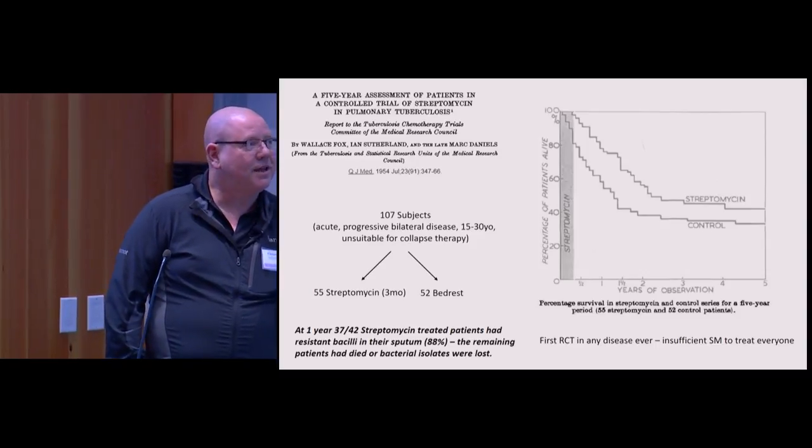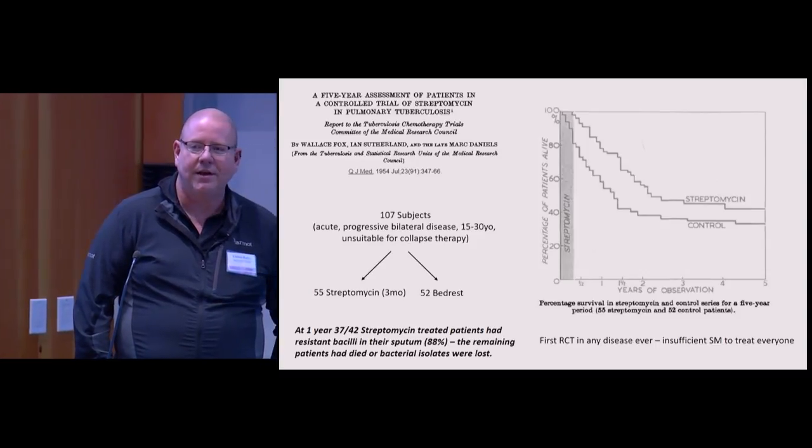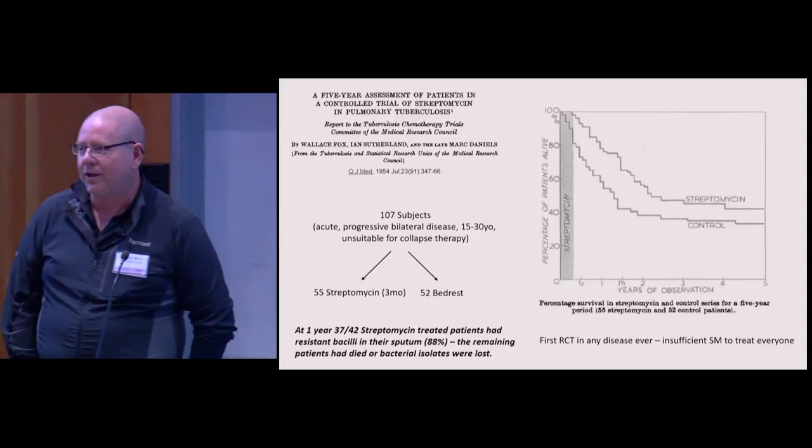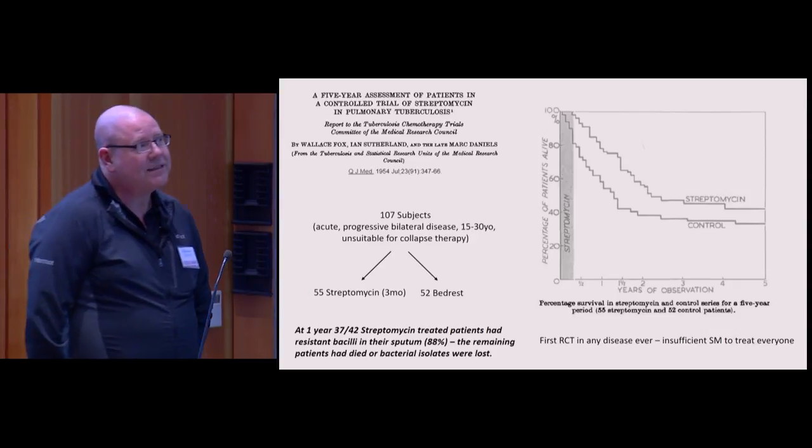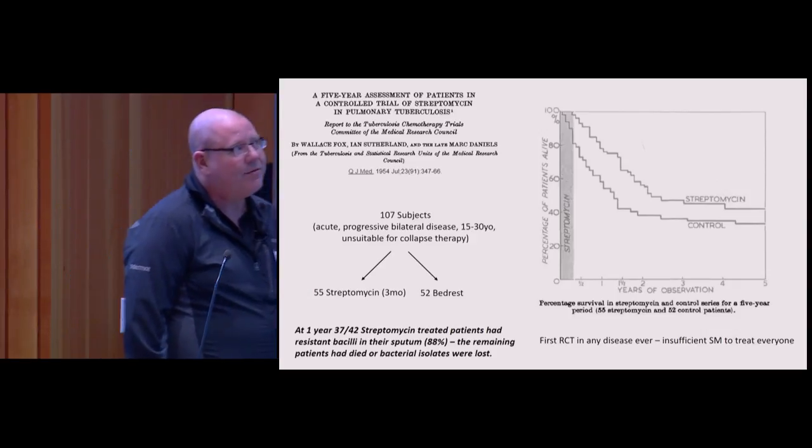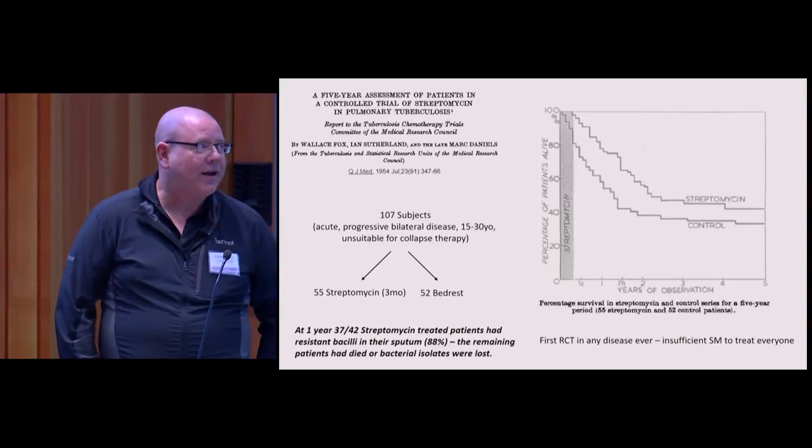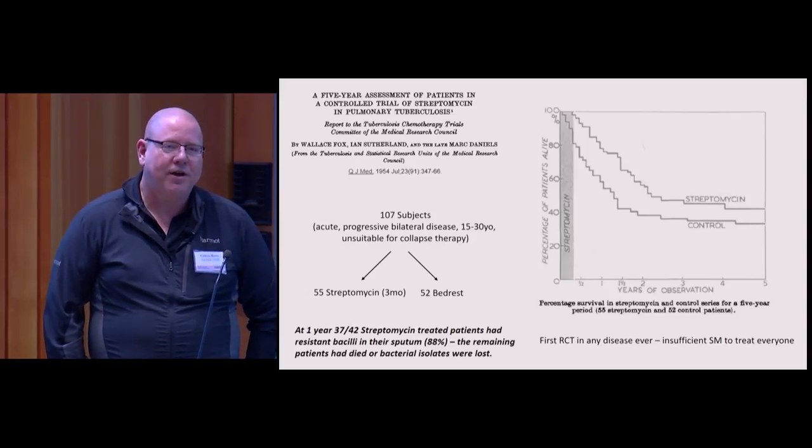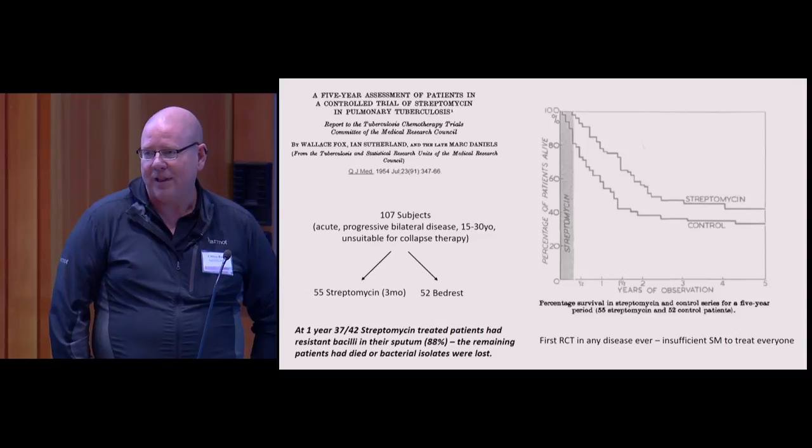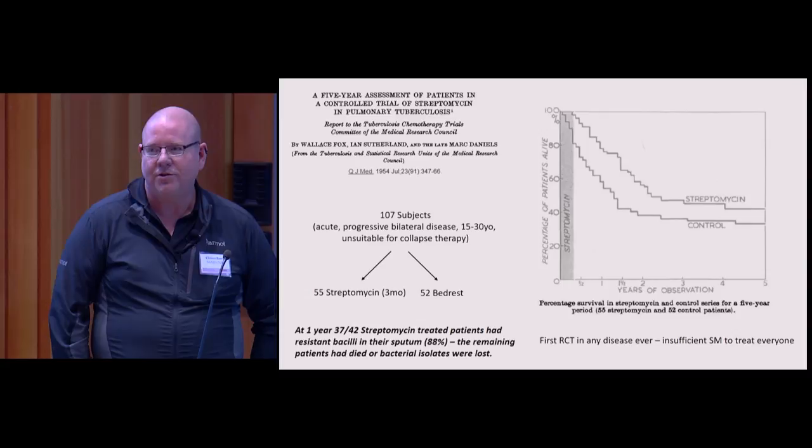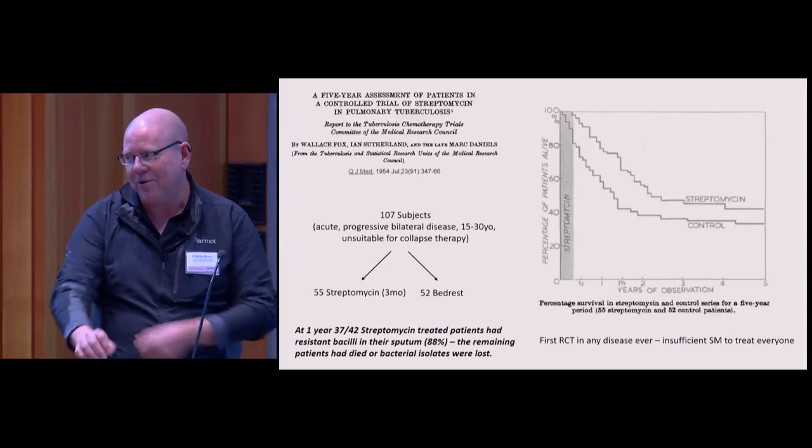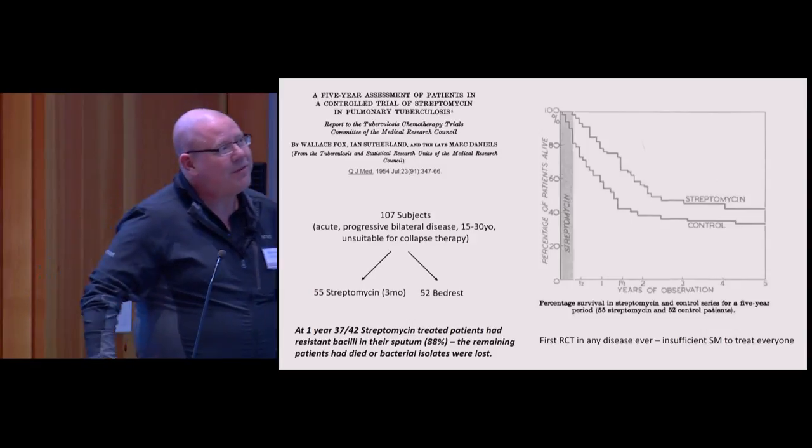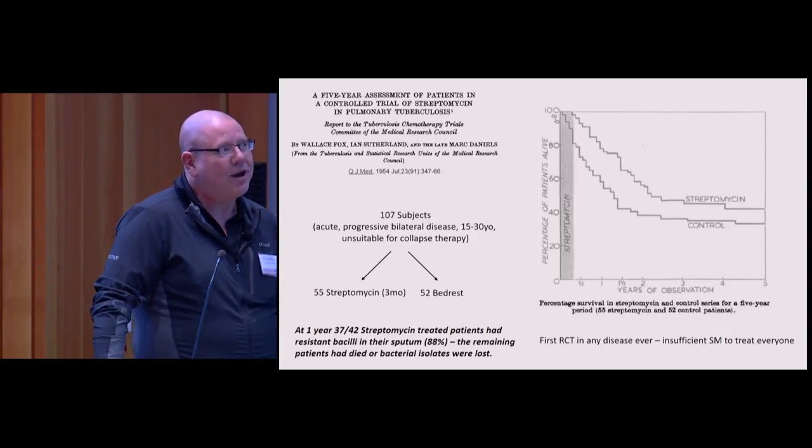This is actual results from the first clinical trial for tuberculosis treatment that was ever performed. This was a clinical trial of streptomycin added to patients with active, acute, progressive bilateral disease who were considered unsuitable for collapse therapy. Collapse therapy was the standard of the day—the way you cured TB was you punctured someone's lung and collapsed it so that you debulked the disease.